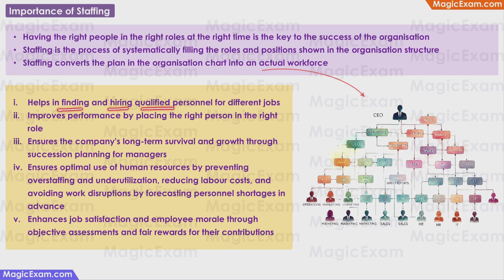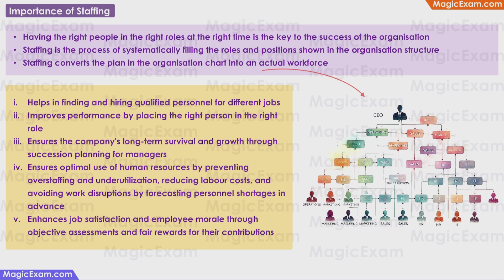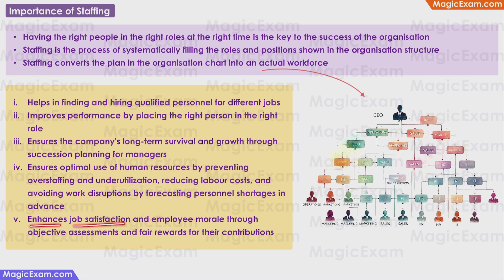Staffing helps in finding and hiring qualified personnel for different jobs, and improves performance by placing the right persons in the right roles. It ensures the company's long-term survival and growth through succession planning, because as managers and employees leave, get promoted, or retire, staffing finds replacements internally or externally. It ensures optimal usage of human resources by preventing overstaffing and underutilization, thereby reducing labor costs, and helps avoid work disruptions by forecasting personnel shortages in advance. Staffing also enhances job satisfaction and employee morale through objective assessments and fair compensation.